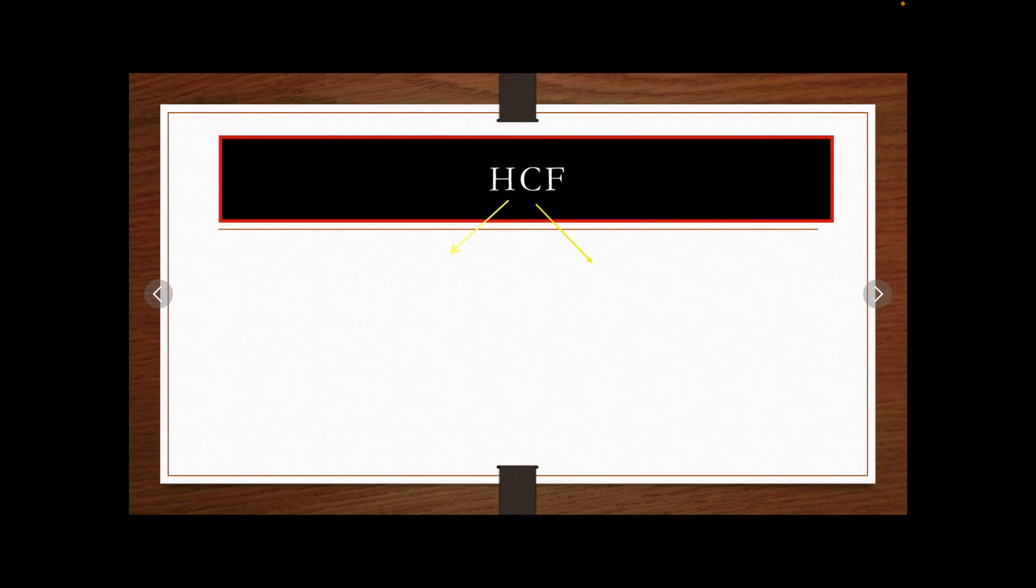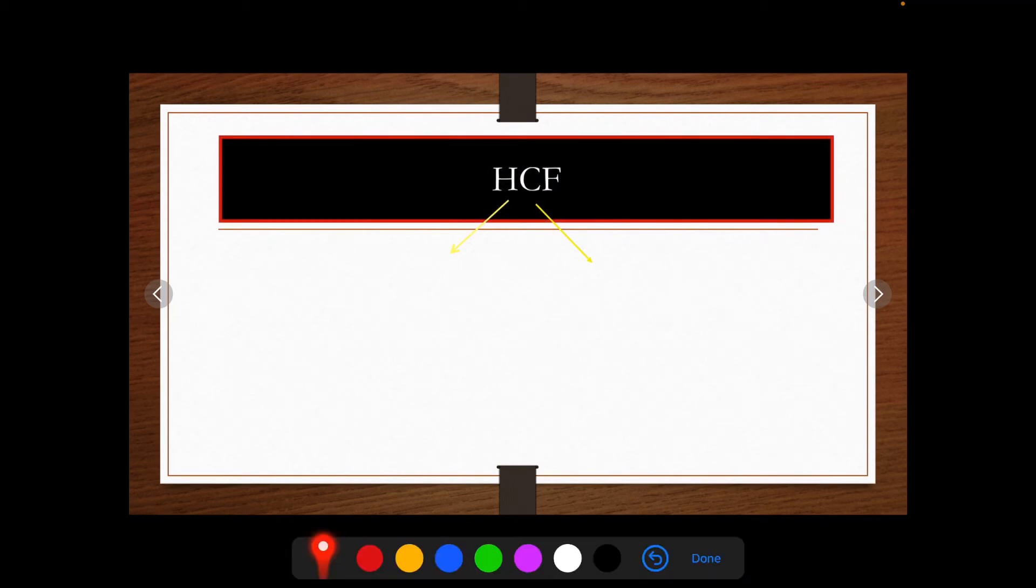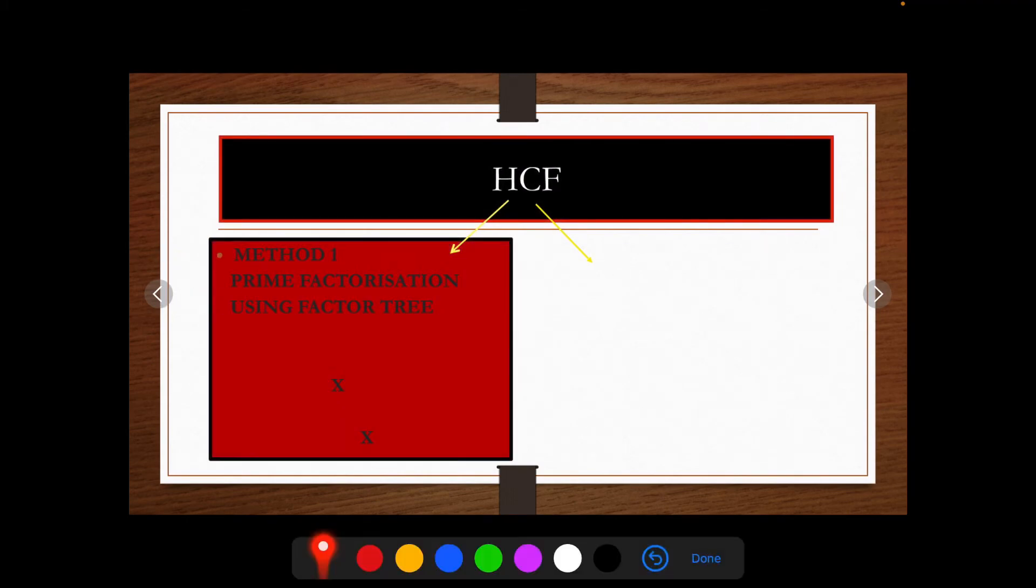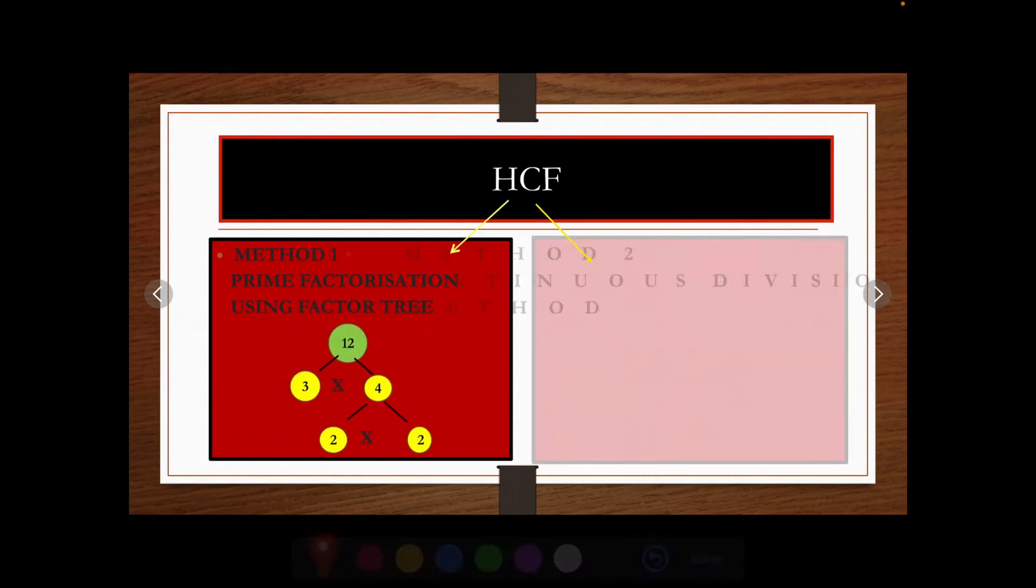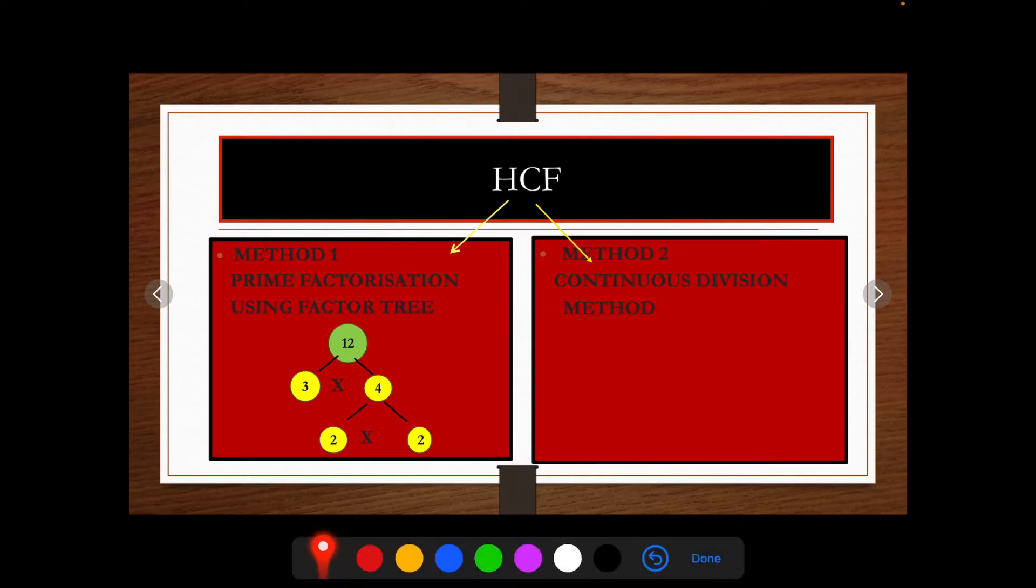Let us see what are the different methods to find HCF. Method 1: Prime Factorization using Factor Tree. Method 2: Continuous Division Method. We will focus on Prime Factorization using Factor Tree.